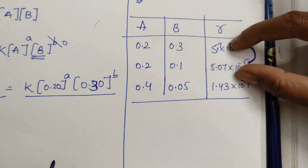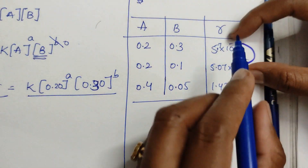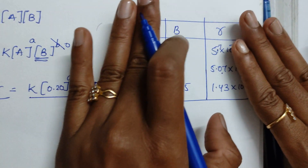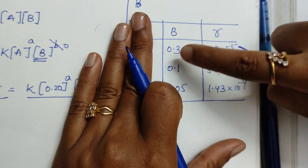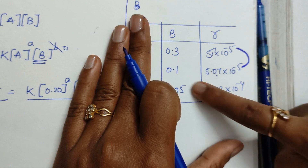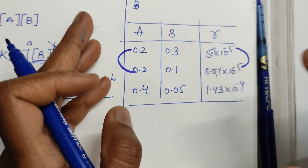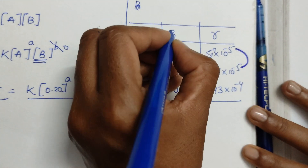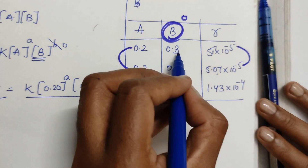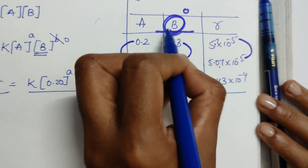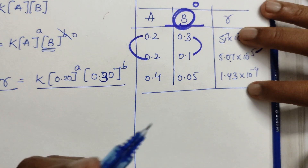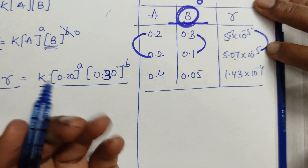Observe here — these two rate values are constant. As I told you in the previous video, if these two are constants and you change the B concentration from 0.30 to 0.10 but there is no change in the rate, then order with respect to B is 0. Directly you can mark that option — whichever species you are changing but showing no change in rate has order 0.